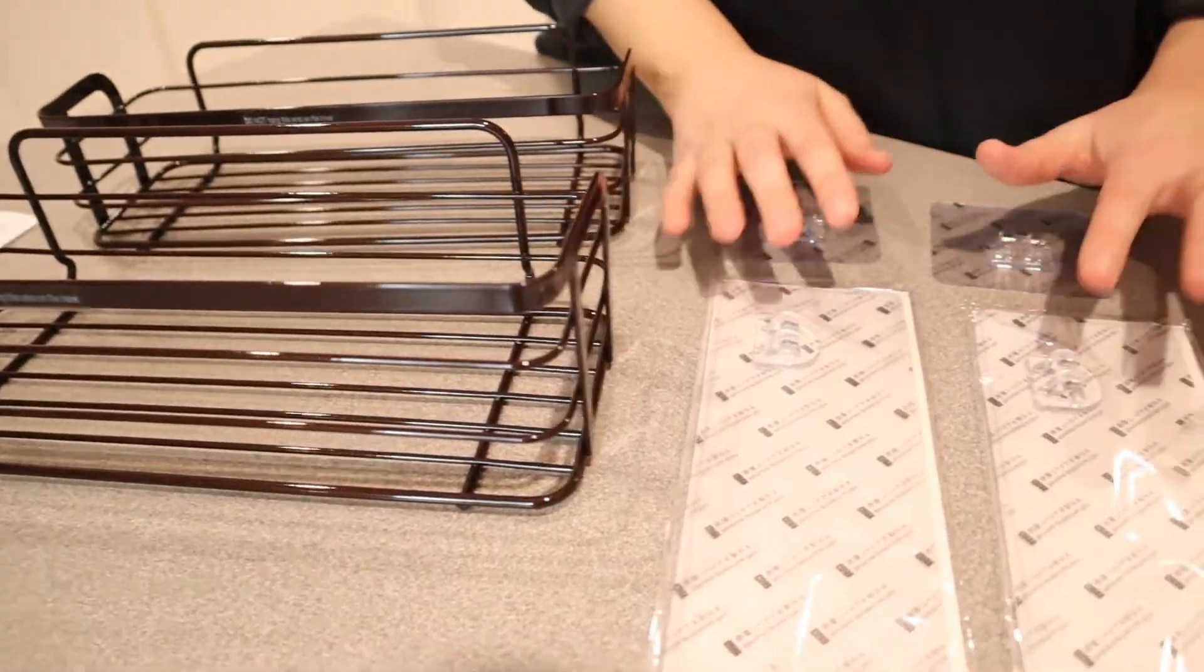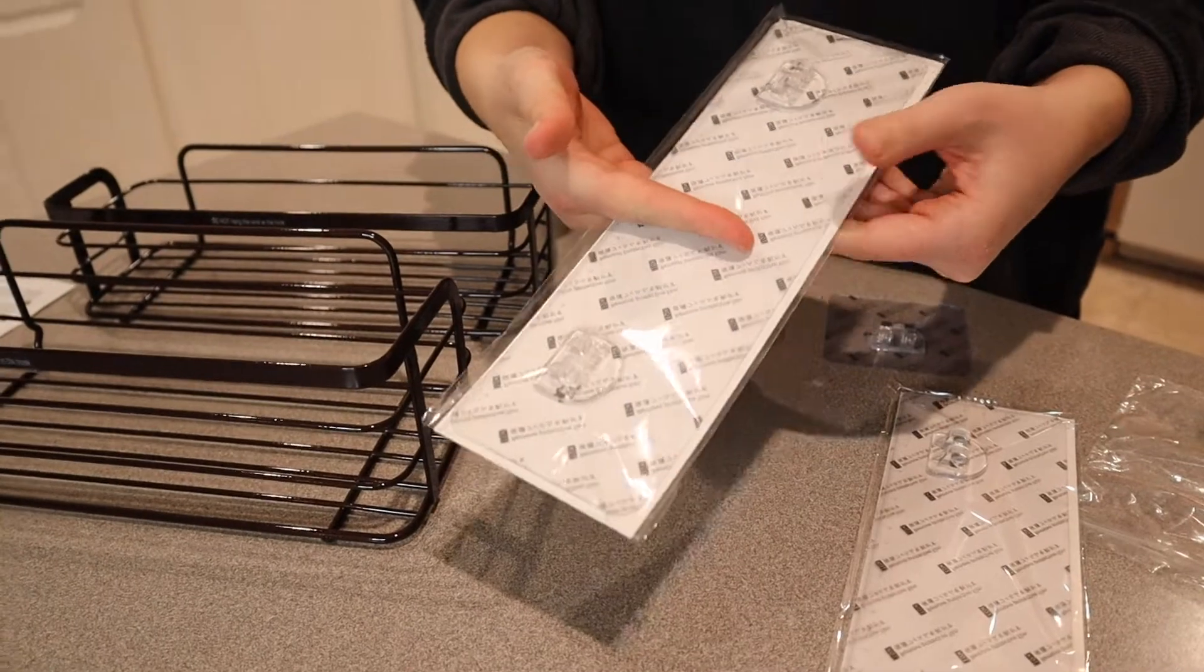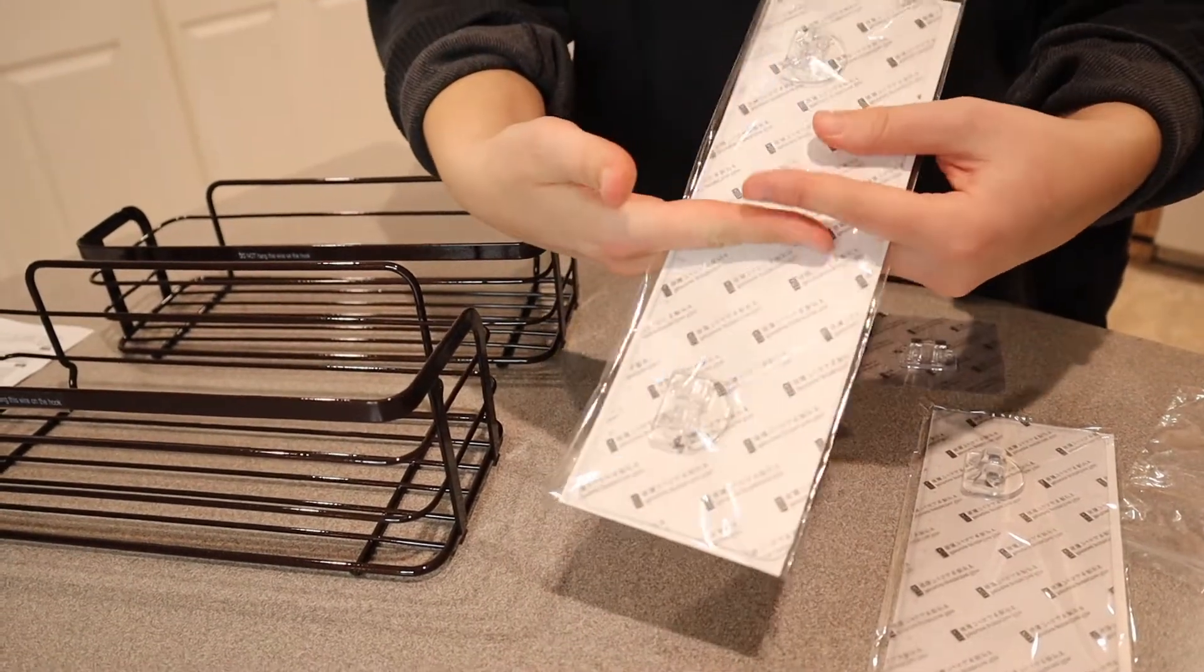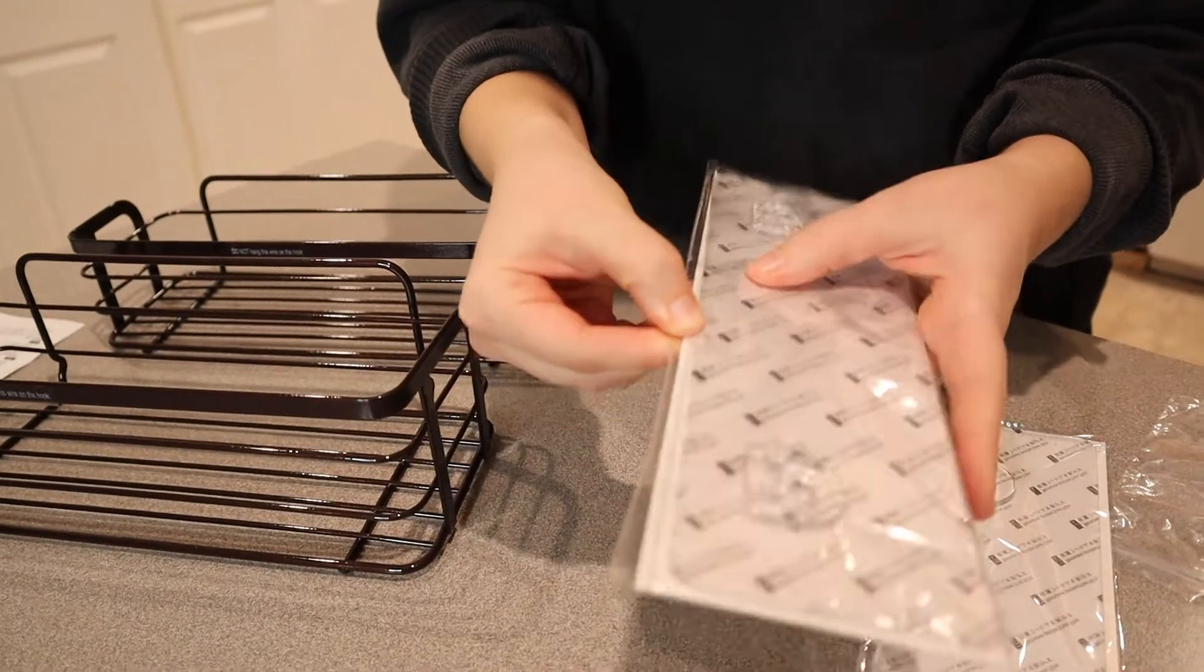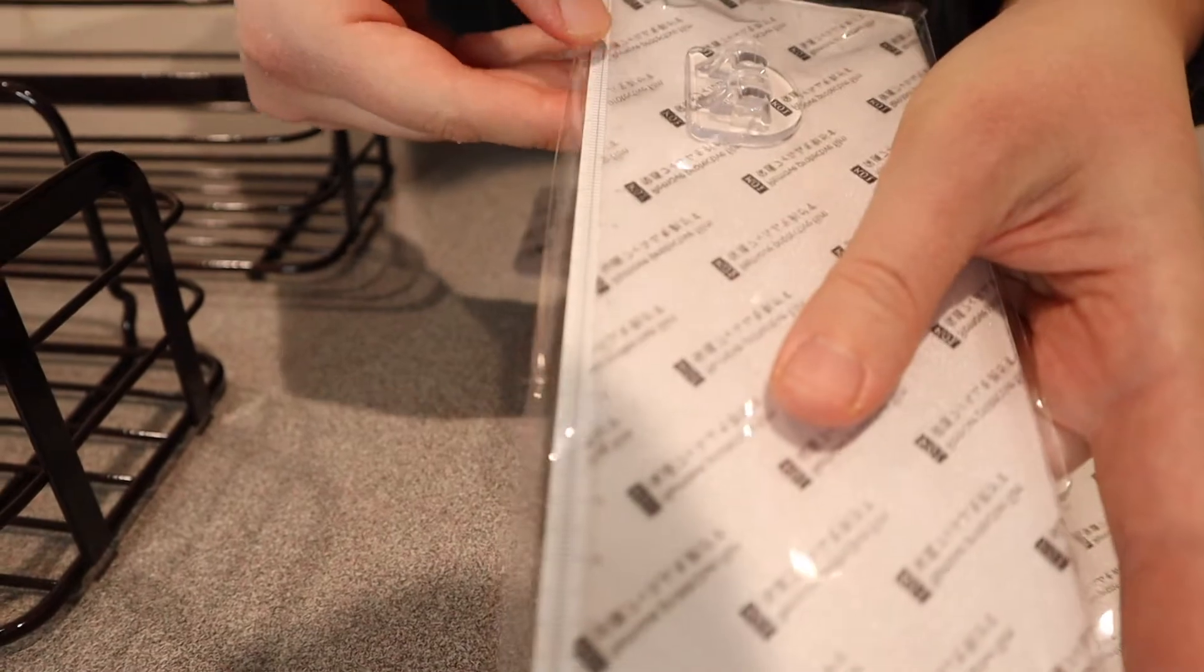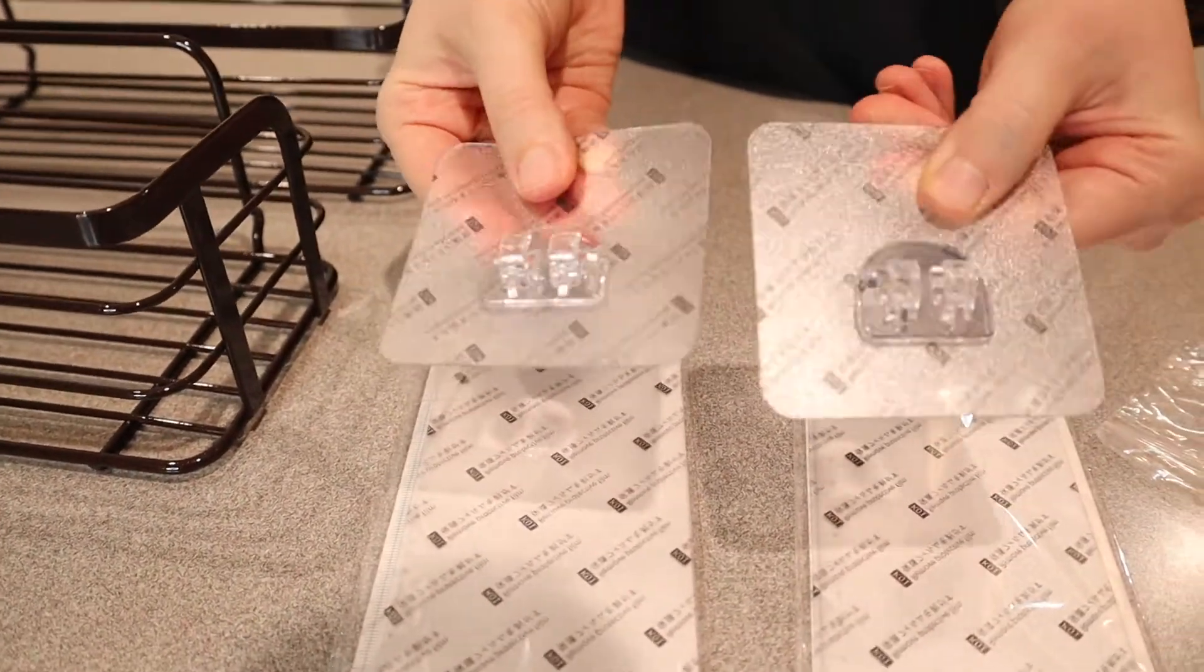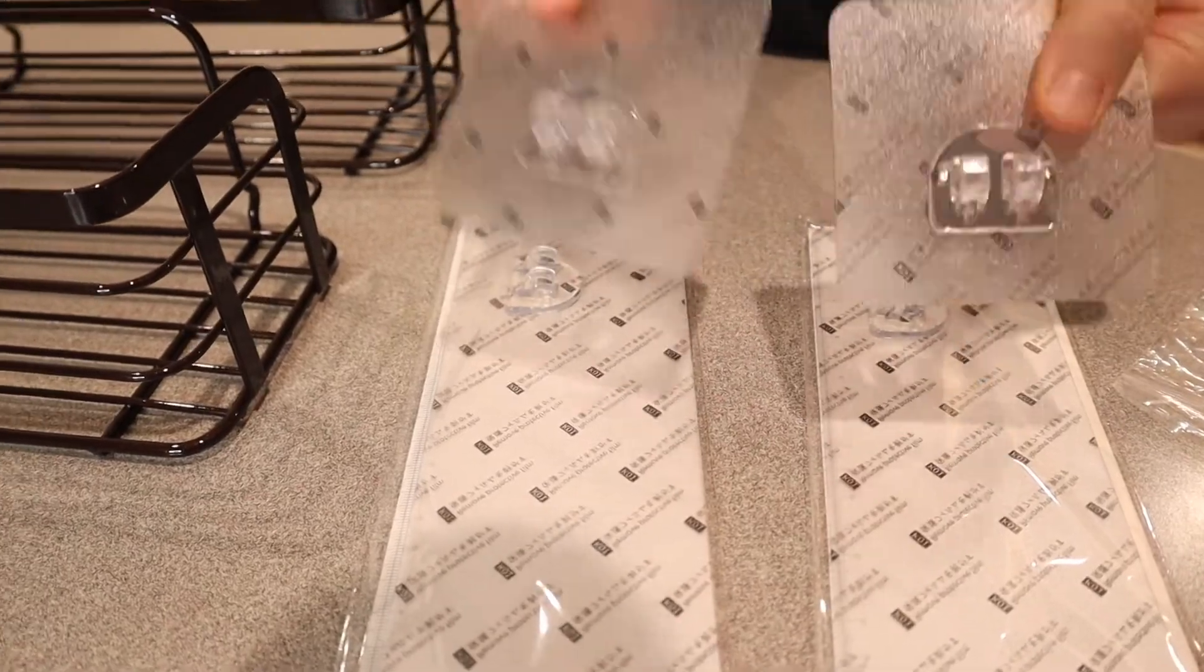And then it also comes with these different adhesive options. So we have these large ones, which you can use to customize whatever fit you need. And it can be depending on where your grout line is. But it gives instructions in here, you can cut it however big you want it. And it also has a little measuring section so that if you have a certain size you need it to fit in, you can use this little measuring as well, which I think is a nice feature. And then it also comes with these two smaller pre-cut pieces. And so I think that that's what I'm going to use today in the bathroom that I have in mind for these.